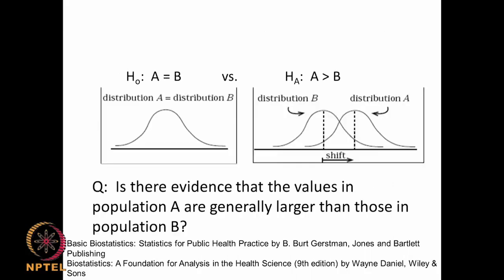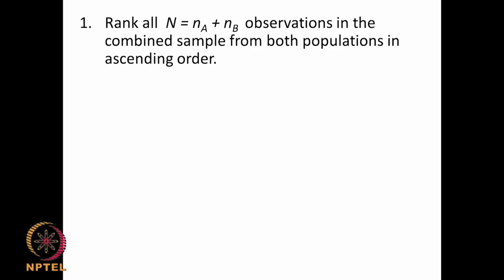So these could be the various types of alternate hypothesis, just like parametric tests. For example, if A equals B the distributions are the same, whereas A not equal to B means they differ. Here A is greater than B because A is shifted to the right. We can ask: is there evidence that the values of A are generally less than population B? These are some good references for health sciences and biological sciences.